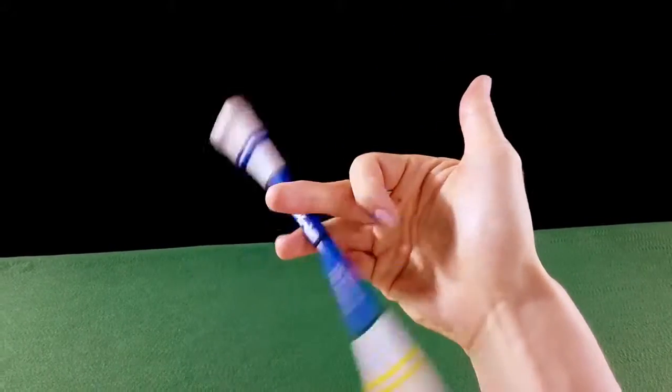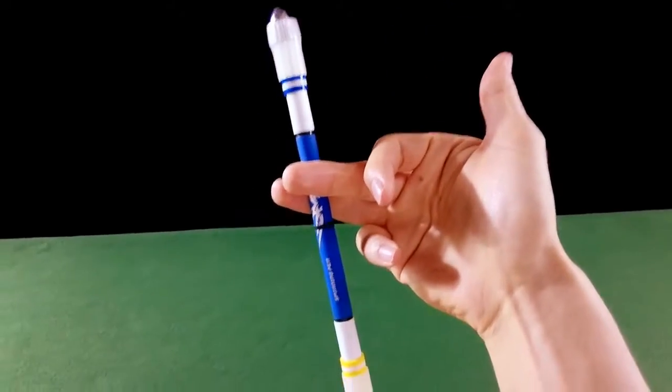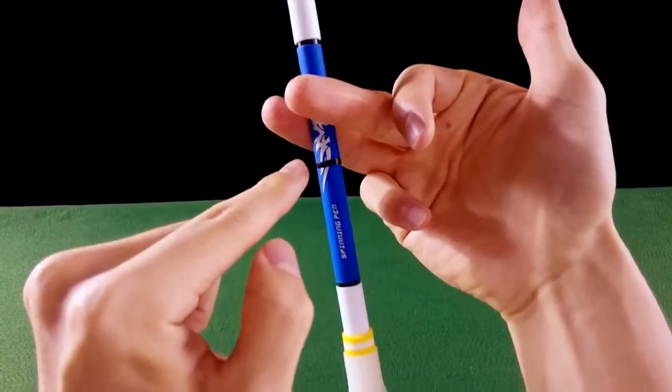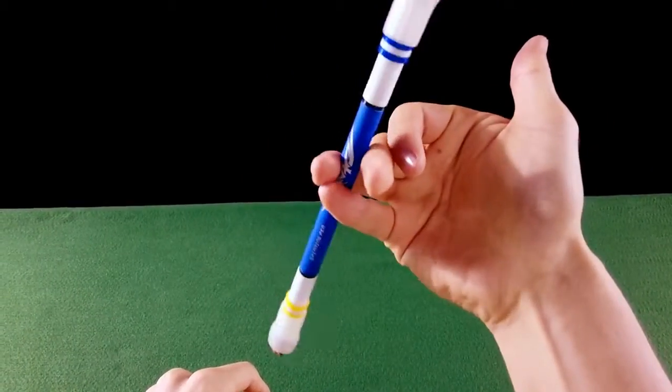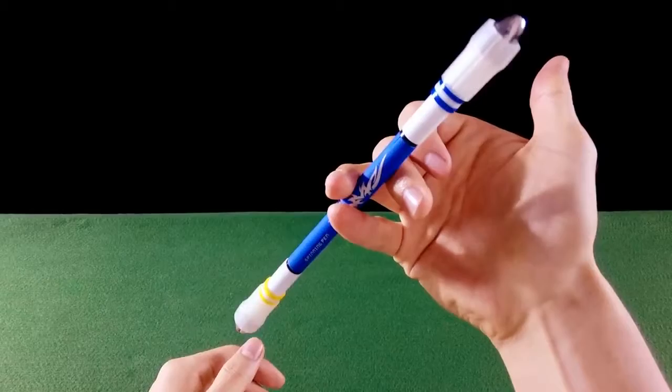And do half a turn. After you finish half a turn, the pinky finger always has to hit the center of gravity of the pen. Look, you see it touches the center of gravity of the pen.